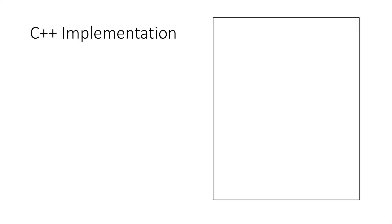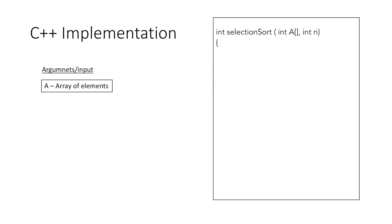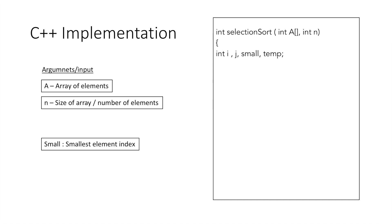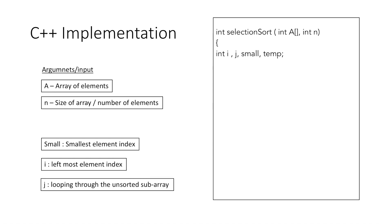So now let's implement this using C++. We start our selection sort function which takes as arguments an array a and an integer n which is the size of the array. The variable small indicates the smallest element index, i points to the leftmost element in the unsorted array, and j is used to loop through the unsorted array. We start the outer loop running from 0 to n-2, since when comparing the last and second-to-last elements it always results in a sorted array. We equate small to i, then start the inner loop using j which runs from i+1 to n-1.